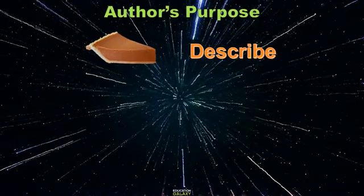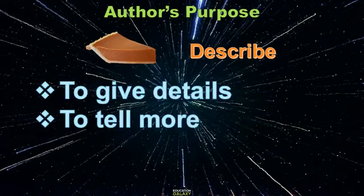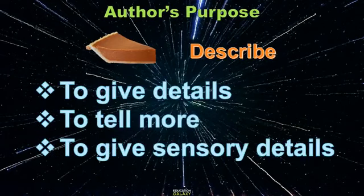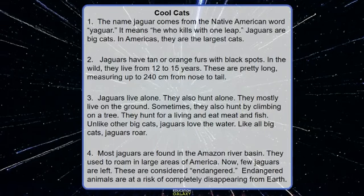Yet another purpose is to describe. The author gives details to tell more about something, and also gives sensory details about the sight, smell, sound, touch, feel, etc. Like this one about jaguars — look at this example. It describes how they look, how tall they are, where they're found. It gives you details about the jaguars.